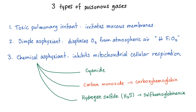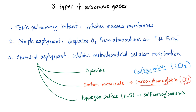Carbon monoxide is a poisonous gas. There are three types of poisonous gases. Number one, toxic pulmonary irritant — they just irritate the mucosa. Number two, simple asphyxiant — they displace oxygen from the atmospheric air. Number three, chemical asphyxiant — they inhibit mitochondrial cellular respiration by interfering with the electron transport chain. Examples: cyanide and carbon monoxide, leading to carboxyhemoglobin. There is a difference between carboxyhemoglobin due to carbon monoxide and carbaminohemoglobin due to carbon dioxide — huge difference. Carbamino is normal; carboxy is not normal. Hydrogen sulfide leads to sulfhemoglobinemia, when your blood turns green.